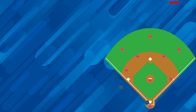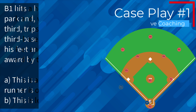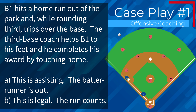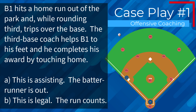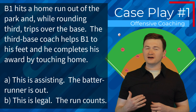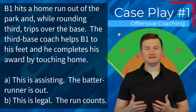So now that we've reviewed the rules, let's review this week's case plays. Case play number one: B1 hits a home run out of the park and while rounding third trips over the base. The third base coach helps B1 to his feet and he completes his award by touching home. Is this A, the batter-runner is out, or B, this is legal and the run counts? The correct answer is B — this is legal because the physical assistance occurs during a dead ball.